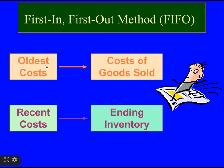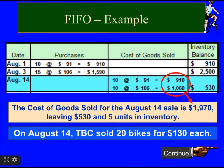First in, first out (FIFO) uses the oldest cost entry for the cost of goods sold and the most recent cost entry for ending inventory. In the FIFO method, the first inventory purchased is used first — its value is applied first to the cost of goods sold.